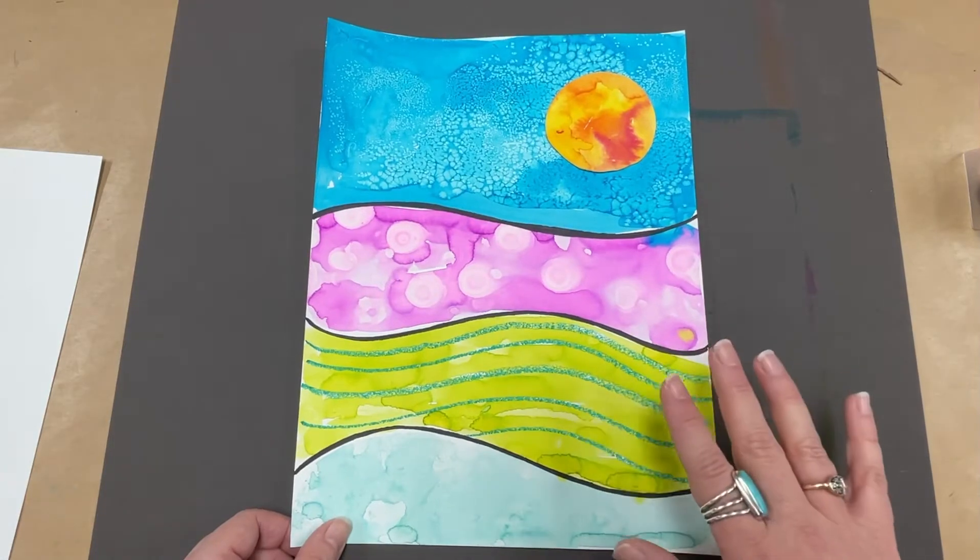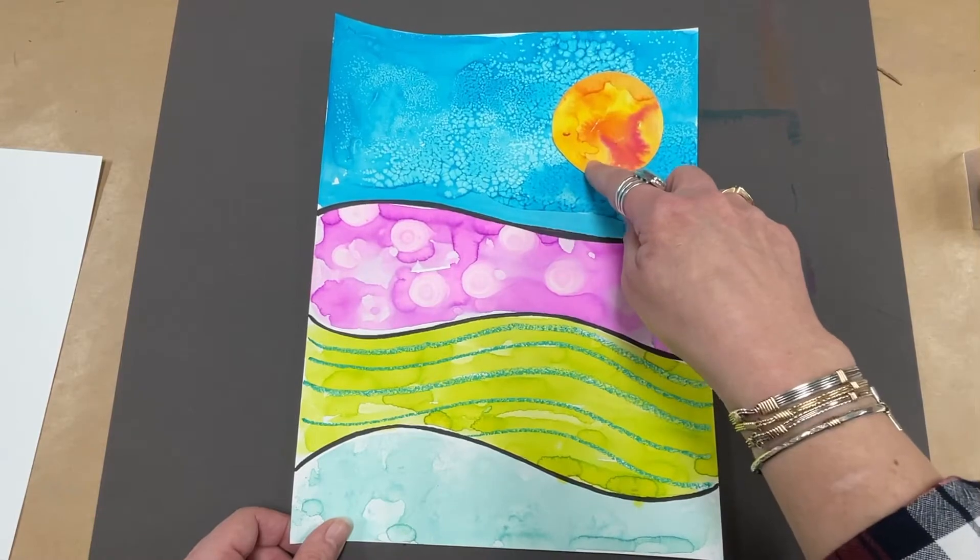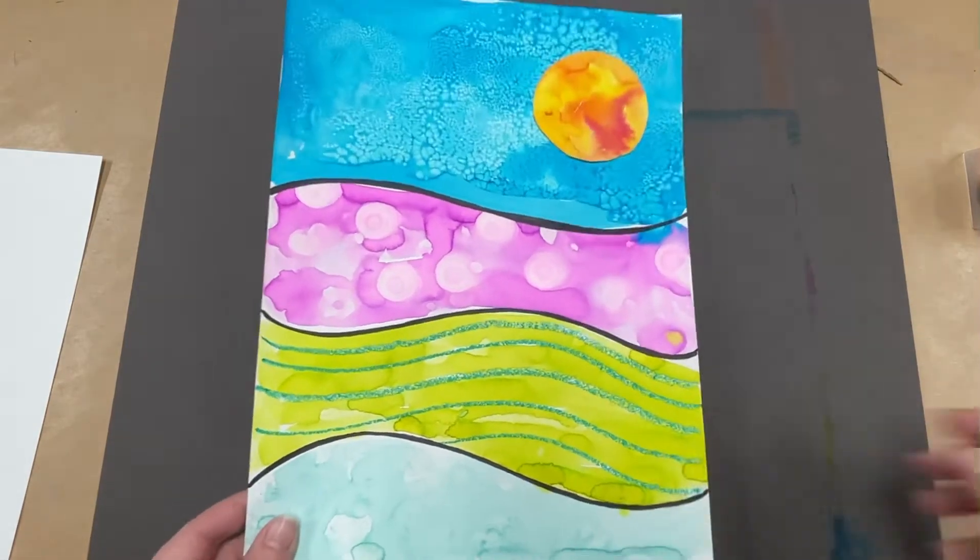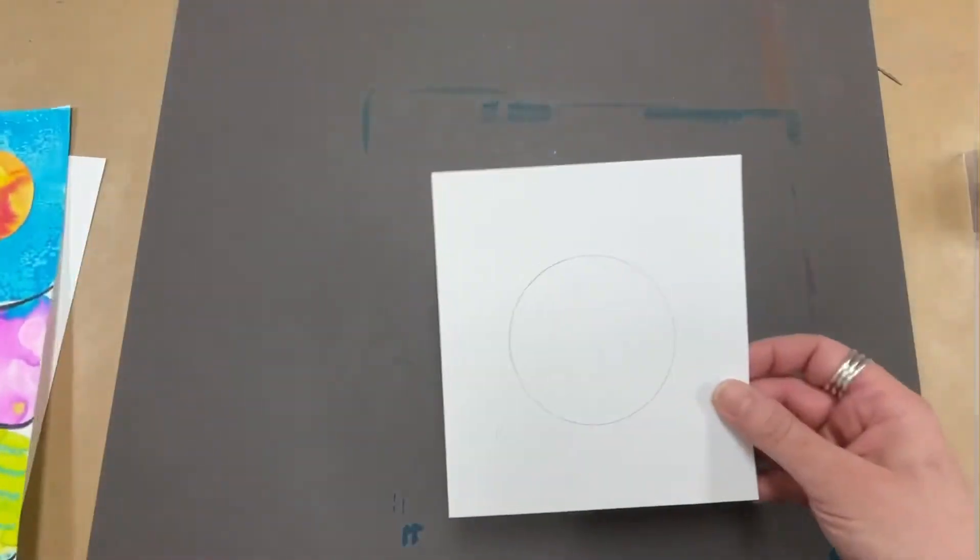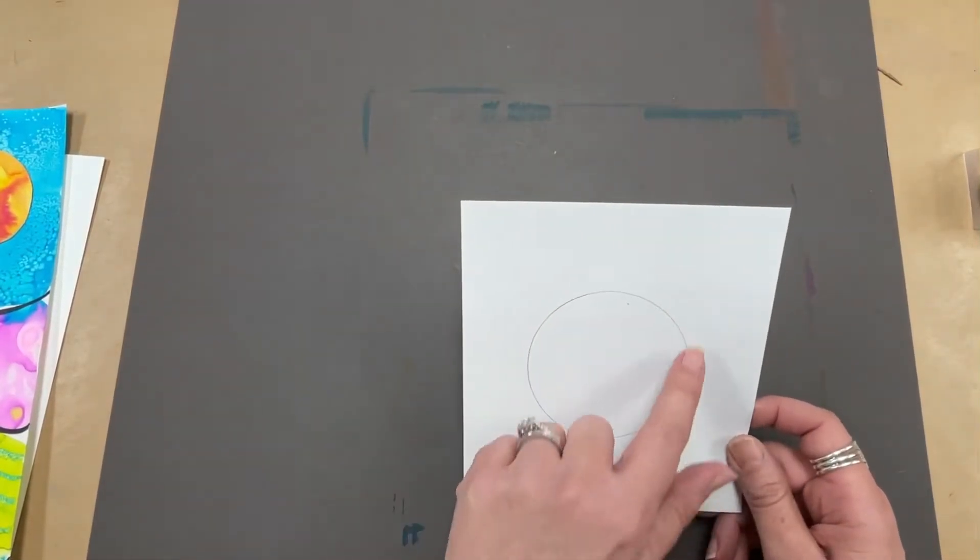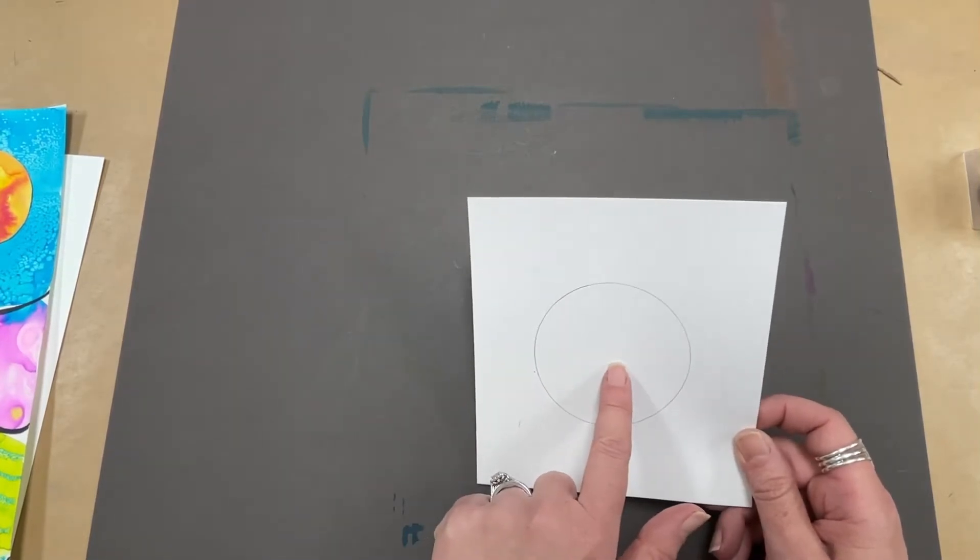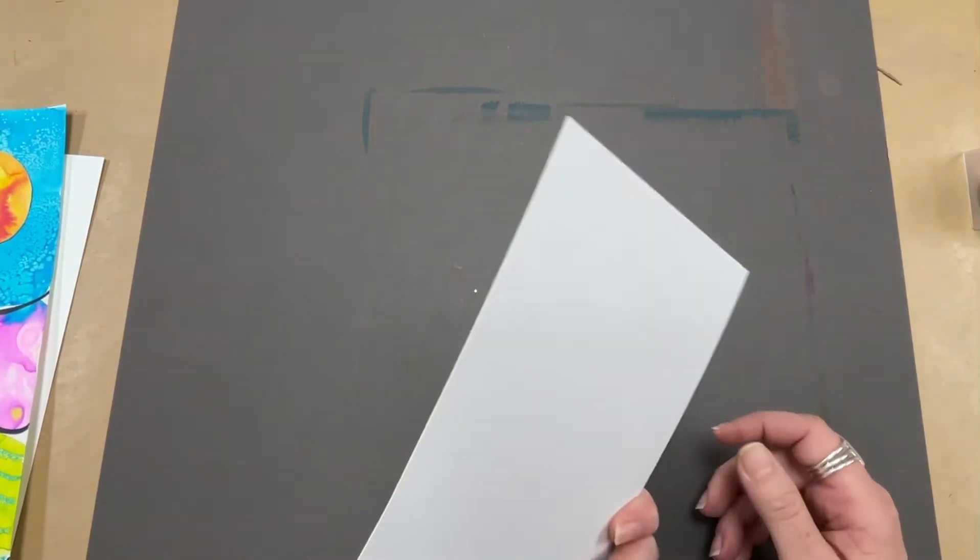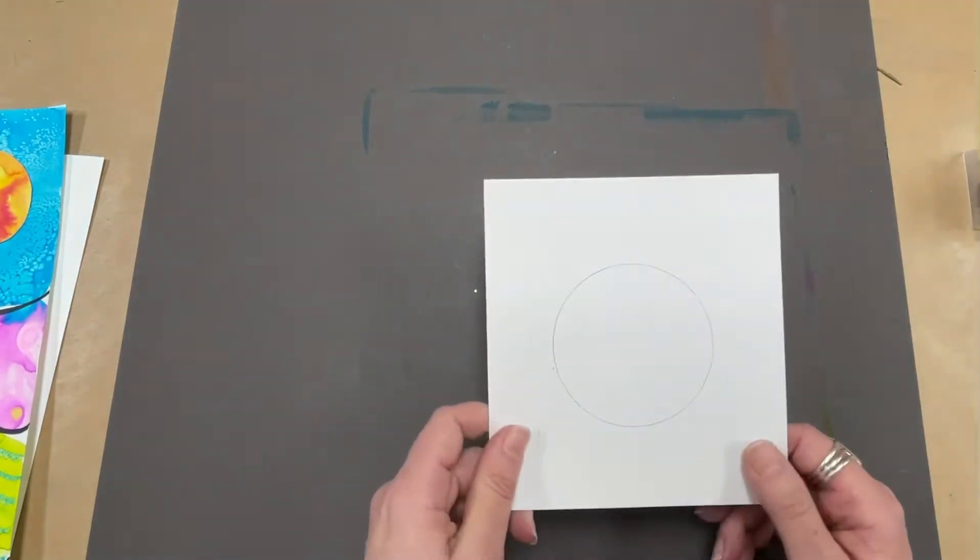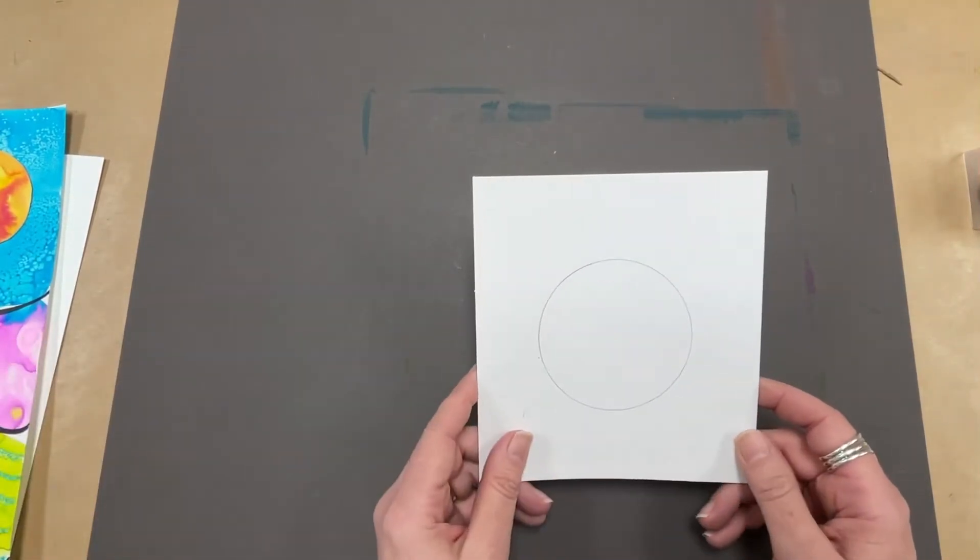The first thing that we're going to do is make our sun because that will be cut out and glued to this. You're going to each get a piece of this smaller watercolor paper and you're going to use your circle template and a pencil and trace a circle on it. Make sure on the back that you write your name because this will have to dry and then you'll cut it out before you glue it onto your landscape.